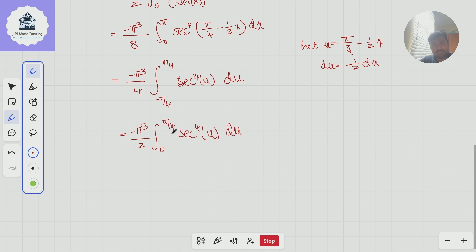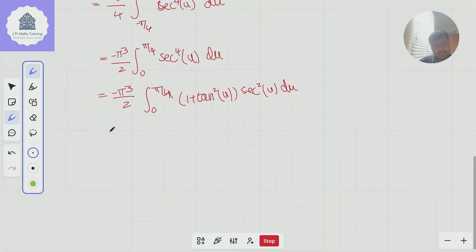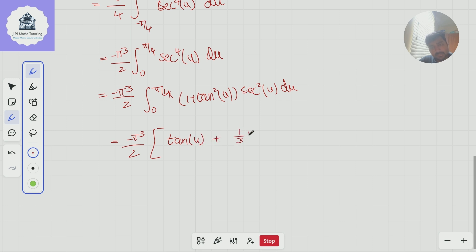And then now I'm just going to integrate this. So minus π cubed over 2, this is now the integral 0 to π over 4 of 1 plus tan squared u times sec squared of u du. And this is nice and easy to integrate. This is minus π cubed over 2 times tan of u plus a third tan cubed of u from π over 4 to 0.